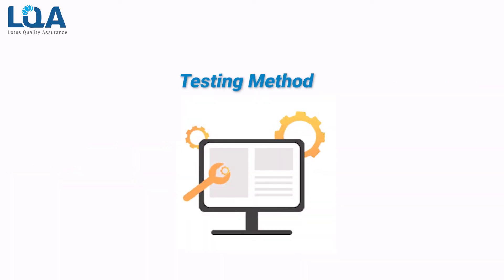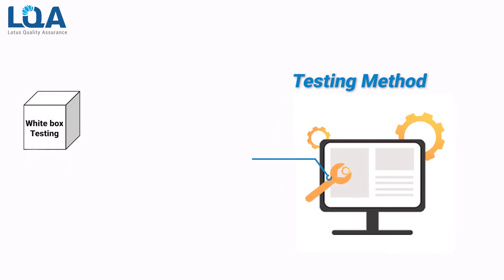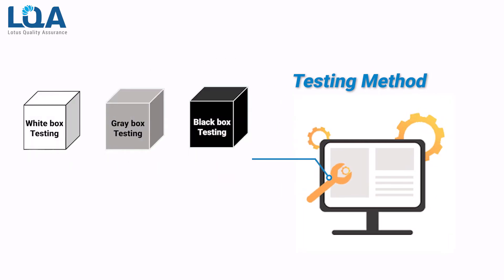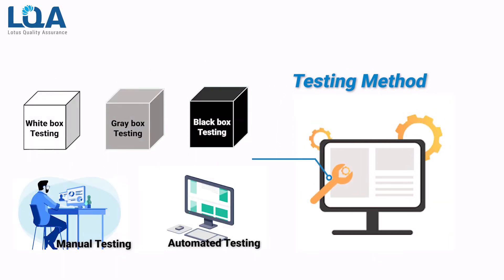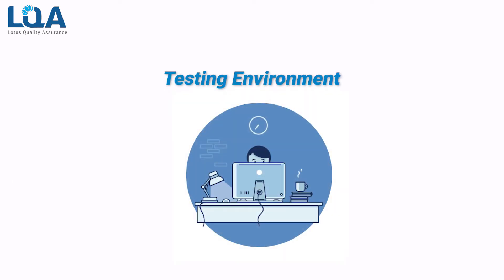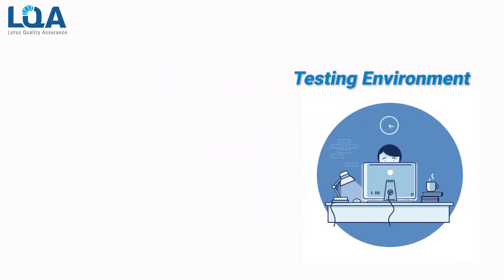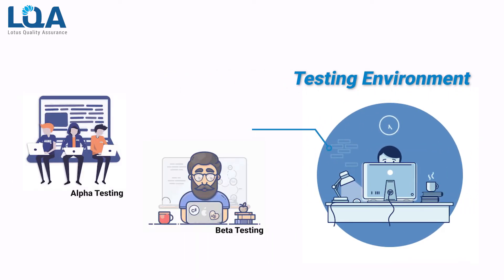Following the testing method, we could have white box, gray box, and black box testing, or manual and automated testing. Following the test environment, we could have alpha, beta, and staging testing, and so on.